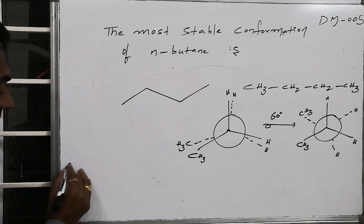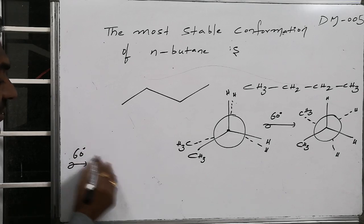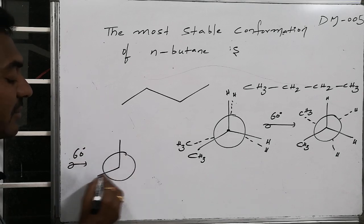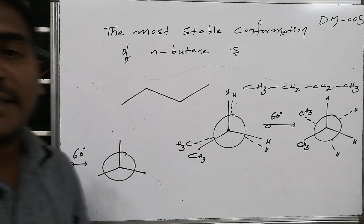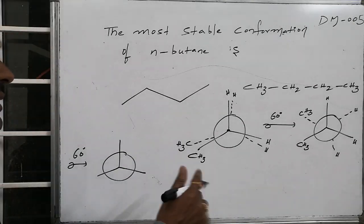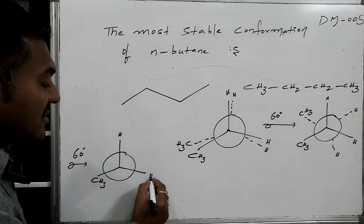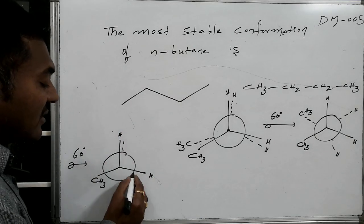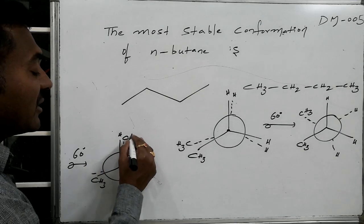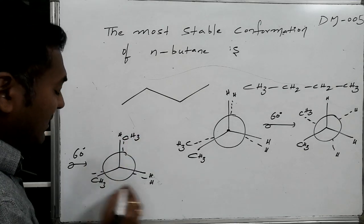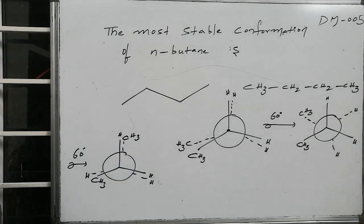Whereas if I rotate another 60 degrees by keeping any one of them as constant. We are keeping from the beginning the front carbon atom as it is hence this is methyl, this is hydrogen, this is hydrogen. Once again we will get another eclipsed part, this will become methyl, this will become hydrogen, this also becomes hydrogen.